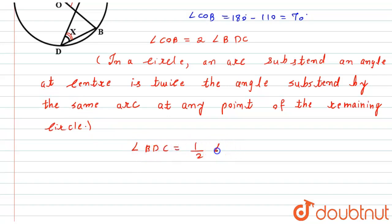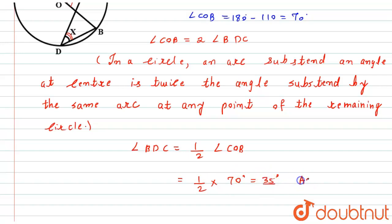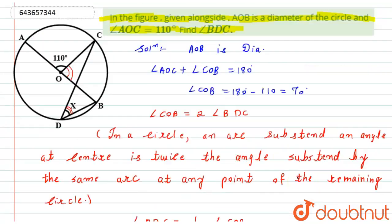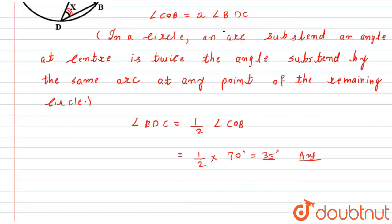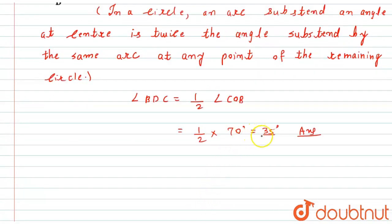The reason is: in a circle, an arc subtends an angle at the center that is twice the angle subtended by the same arc at any point on the remaining circle. So angle BDC equals one-half of angle COB, which is one-half of 70 degrees, giving us 35 degrees. This is the required answer — angle BDC equals 35 degrees.